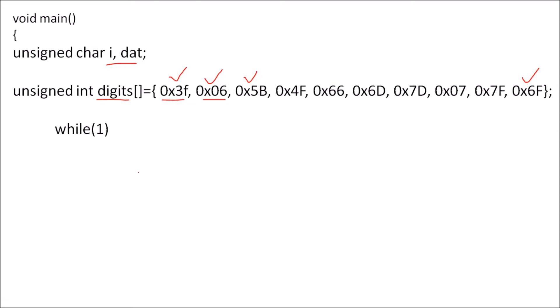We will write the program in a while(1) loop because we want to display it continuously. Then here a for loop is used. In the for loop, i is initialized with 0, and we are going to execute this loop till i is less than 10, because 10 elements are there in this array. We are going to read the value of each element. So i should vary from 0 to 9 — that's why i less than 10 is written, with i plus plus.